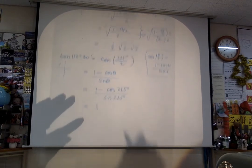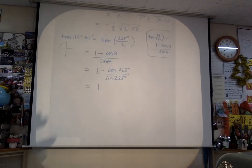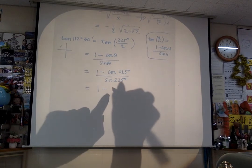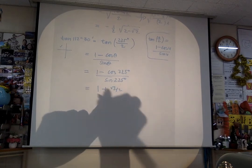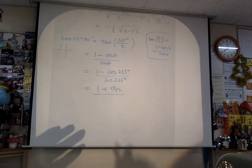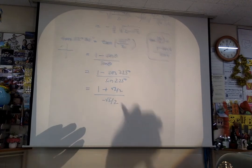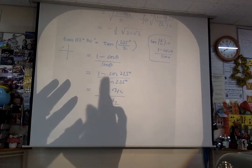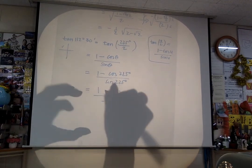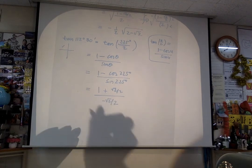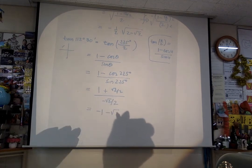You know all these values. 1 minus cosine of 225 — cosine of 225 is negative root 2 over 2 — so the 1 minus becomes 1 plus root 2 over 2. All over sine of 225, which is negative root 2 over 2. And there's no plus or minus here — it comes out naturally.